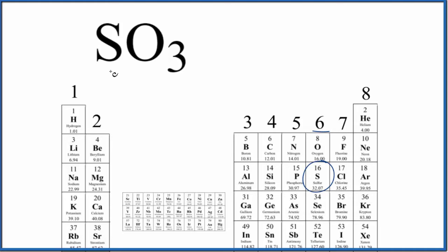Oxygen is in the same group as sulfur. It has six valence electrons, but we have three oxygen atoms. We'll multiply that by 3. 6 plus 3 is 18, plus 6, 24 total valence electrons for the SO3 Lewis structure.